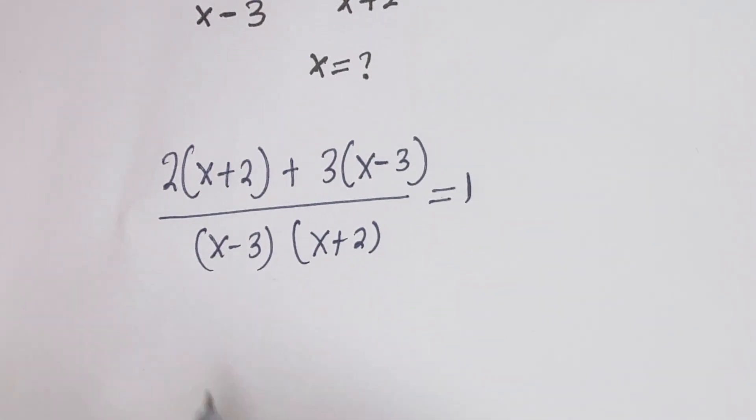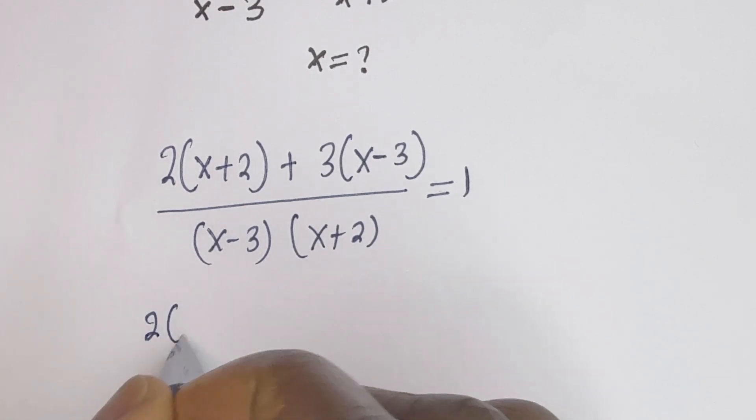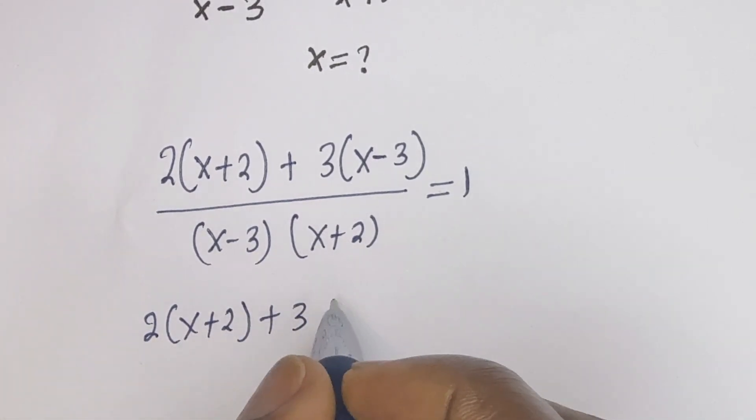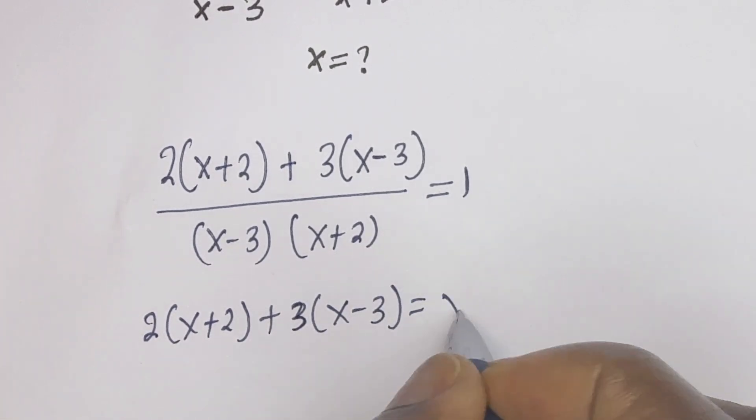If you cross multiply, we have 2 bracket x plus 2 plus 3 bracket x minus 3 is equal to x minus 3 bracket x plus 2.